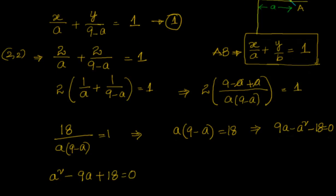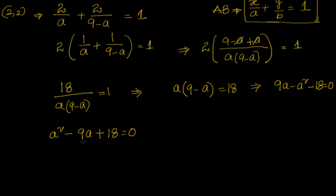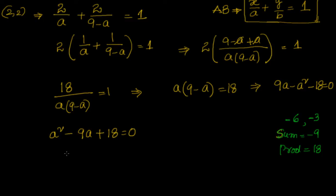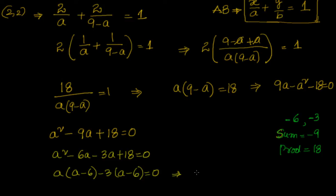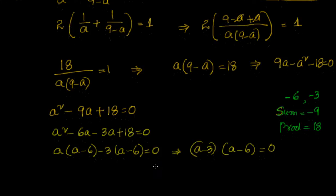Now we solve this quadratic equation using splitting the middle term. We need two numbers whose sum is -9 and product is 18. Since the product is positive and sum is negative, both numbers must be negative: -6 and -3. So we write a² - 6a - 3a + 18 = 0, which factors as (a-3)(a-6) = 0. Therefore a = 3 or a = 6.